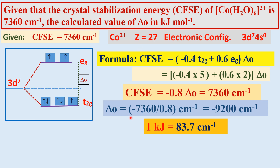Therefore, Δ₀ = 7360 cm⁻¹ ÷ 0.8 = 9200 cm⁻¹.